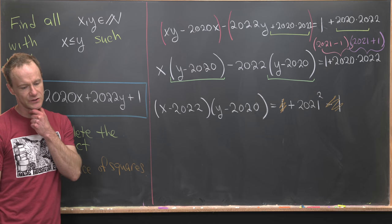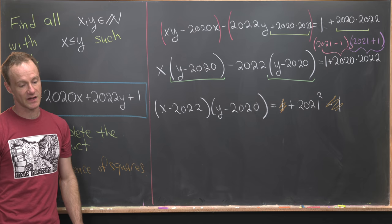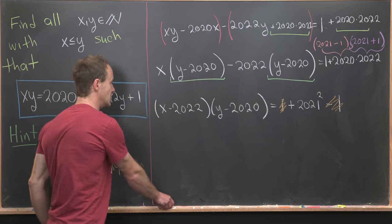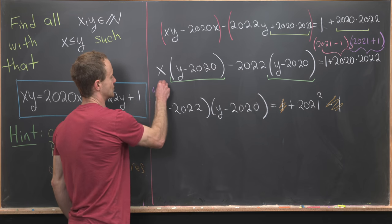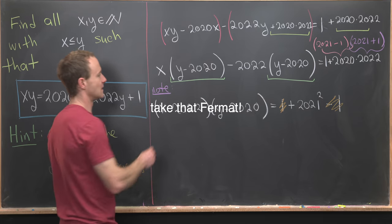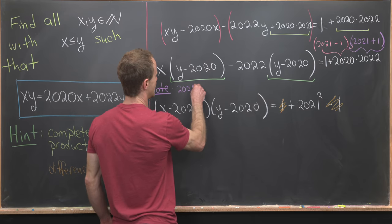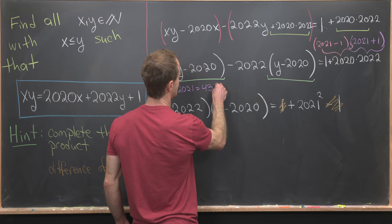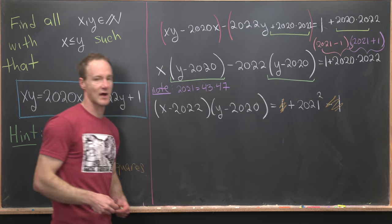Well, the 2021 factors like 43×47. So let's maybe note that right here. So I'll just fit it into the margin. So I have space in the margin for this. So 2021 = 43×47. That's the prime factorization.